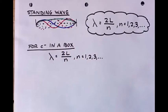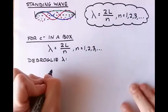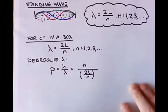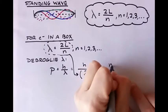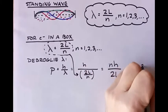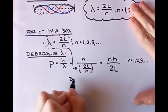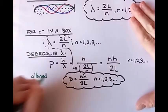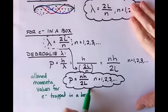We can put that into de Broglie's equation and solve for the momentum of the electron inside the box. Momentum equals H over lambda. Replacing lambda with 2L over N, we get that the momentum equals NH over 2L, where N equals 1, 2, 3, and so on. Those are the momenta that are allowed for the electron trapped in a box — those are the only possible values for the momentum.